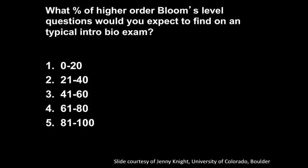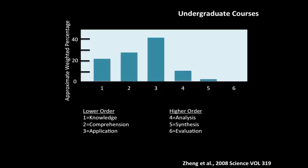If you teach physics or chemistry, you could substitute that in there as well. In an introductory course, are there a lot of higher order Bloom's level questions, or fewer? A study done in 2008 looked at AP biology questions, undergraduate courses, GRE, MCAT, and first-year medical school exams. It showed that the proportion of questions on all these assessments was heavily skewed toward the low-order levels — the vast majority were at the knowledge, comprehension, and application level.